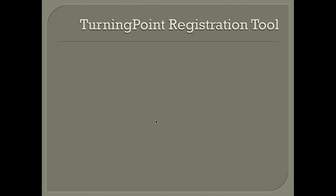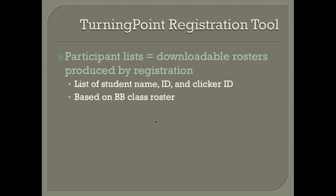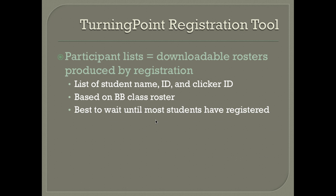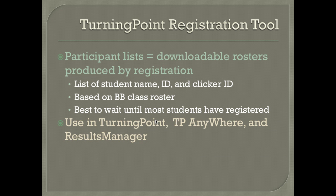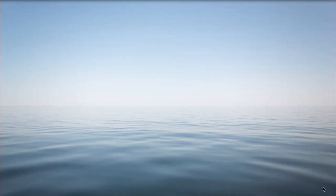Once most or all students in a class have registered, the list of students and IDs can be downloaded as a participant list into various Turning Technologies software. The list provides the student name, student ID, and clicker ID based on the Blackboard class roster. It's best to wait until most students have registered before downloading. The participant list can then be used in Turning Point, Turning Point Anywhere, and Results Manager to generate session reports and manage clicker use data for semester grading.